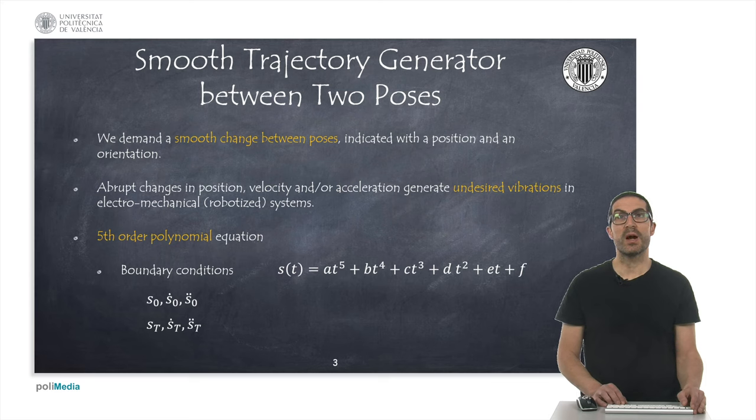Trajectory generators are required to generate smooth changes between different positions, in order to reduce unwanted vibrations that appear in many electromechanical systems such as robots. So, to fulfill this requirement we must avoid sudden changes in positions, but also in speeds and accelerations over time.